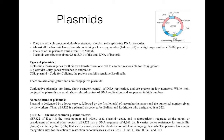Regarding the nomenclature of plasmids: a plasmid is designated by the lower case letter 'p', followed by the first letters of the researcher's names and a numerical number given by the workers. For example, pBR322 — where 'p' means plasmid, 'BR' refers to the researchers Bolivar and Rodriguez, and '322' is the number given by the workers.